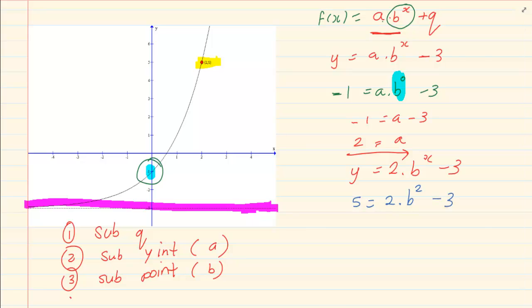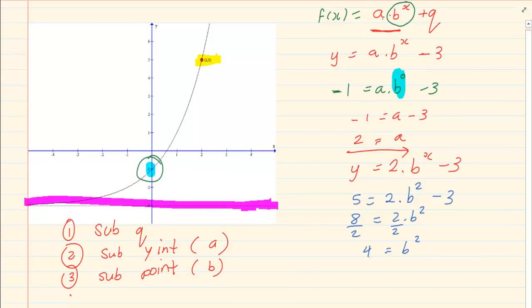Again your exponential rules become handy. Minus 3, take it over, we have 8 divided by 2. So we have B squared is equal to 4. Now 4 exponential rules. We need to break it down. Now we have 4 is equal to B squared.